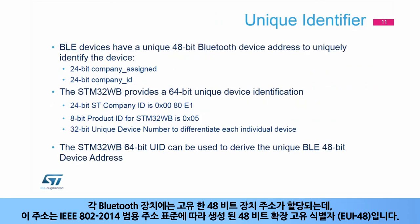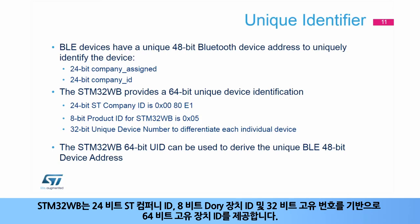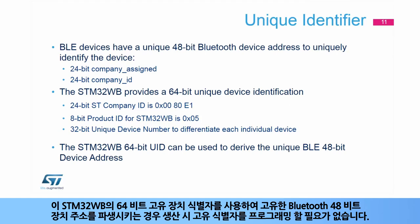Each Bluetooth device is allocated a unique 48-bit device address, which is a 48-bit extended unique identifier, or EUI-48, created in compliance with the IEEE 802-2014 Universal Addresses Standard. The STM32WB provides a 64-bit unique device identifier based on the 24-bit ST Company ID, an 8-bit DORI device ID, and a 32-bit unique number. This STM32WB 64-bit unique device identifier can be used to derive the unique Bluetooth 48-bit device address, avoiding having to program the unique identifier in production.